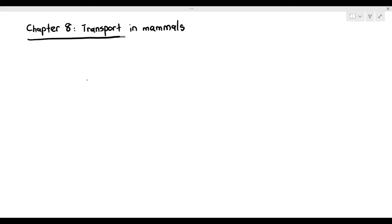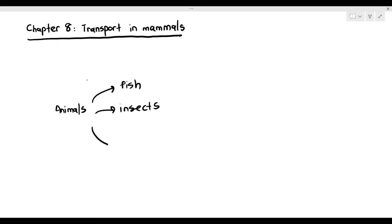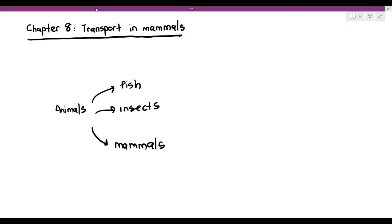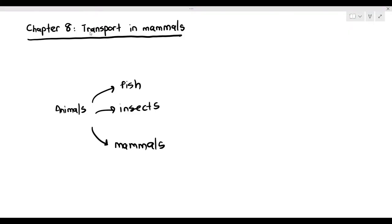For chapter 8 we're going to be looking at transport in mammals. Under animal transport it can be quite confusing because the transport in fish, in insects, and in mammals will have differences between them. For the purpose of chapter 8 we are just going to be concerning ourselves with what is happening in mammals — we're not going to go into fish or insects.